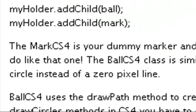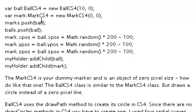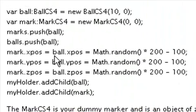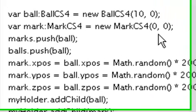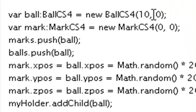The code is pretty simple, and it shows right here an example of a ball and a marker. You just instantiate that, and you assign the same position to the marker and the ball — X, Y, and Z — and you add the marker and the ball to the stage. Now the marker has a pixel size of zero, so you don't even see it on the screen, whereas the ball has a radius of 10. Great trick, and it works.